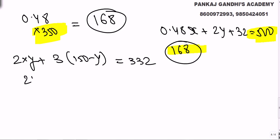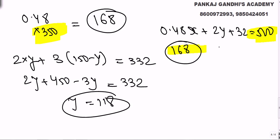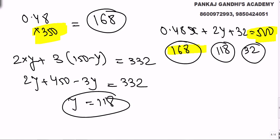Setting up: 2y + 3(150 − y) = 332. Expanding: 2y + 450 − 3y = 332, giving −y = −118, so y = 118 stamps of 2 rupees and z = 32 stamps of 3 rupees.